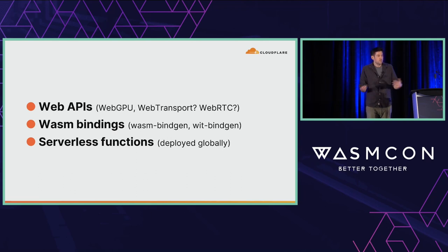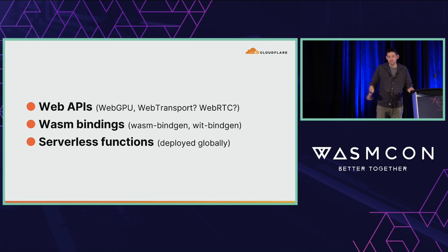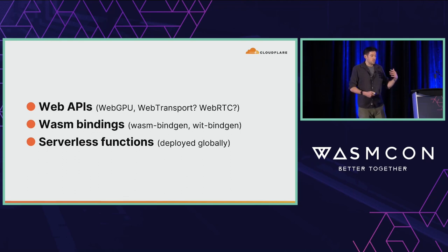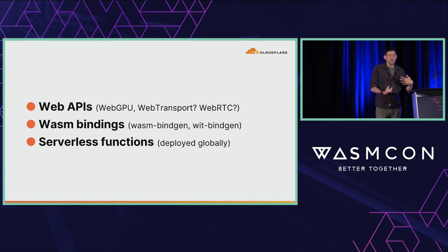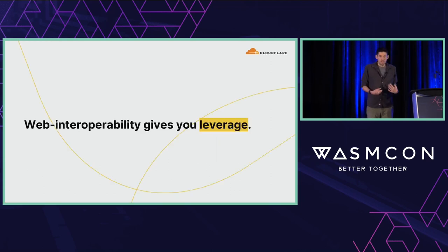What are the other things that are part of the web platform today that if you could support them in a serverless function — things like WebTransport, things like the WebRTC APIs from browsers — what could you build for a globally distributed application all over the world? We're thinking about WIT specifications and WIT definitions, and using WIT-BindGen to move a layer beyond WASM-BindGen so that we're not having to write bindings on a language-specific basis. Web interoperability really gives us a lot of leverage and portability across client and server, and that's where we think the opportunity really is.